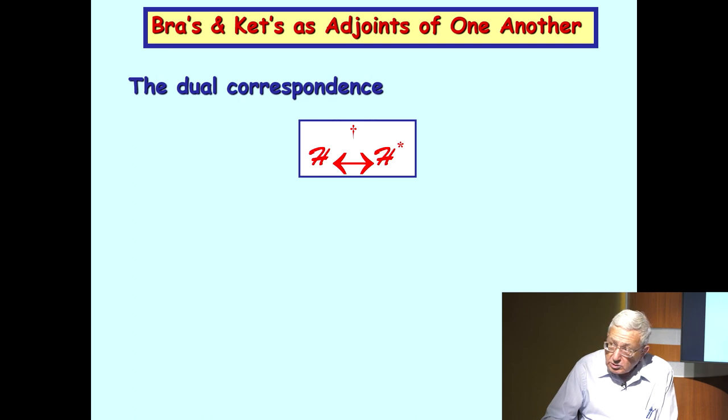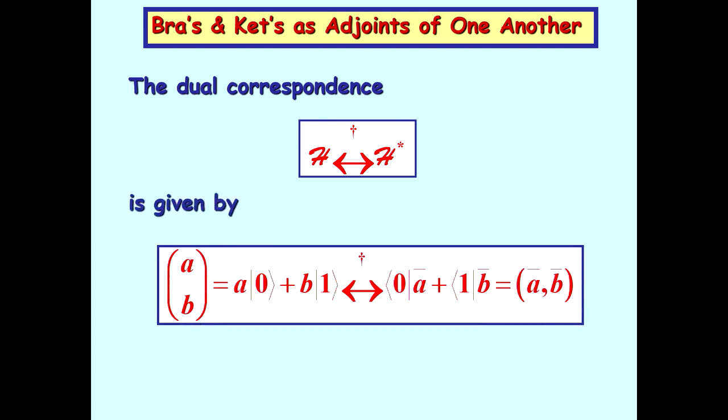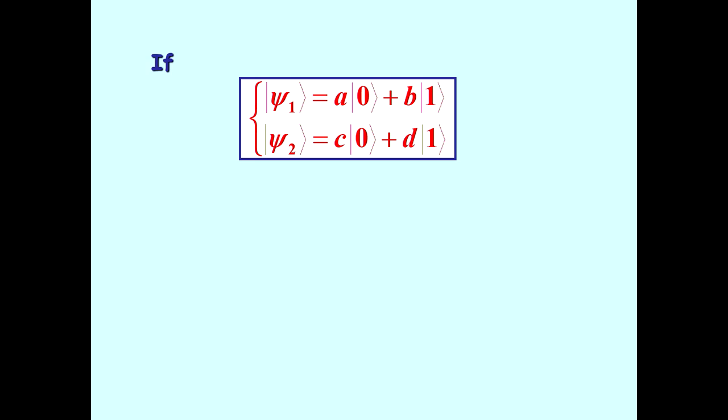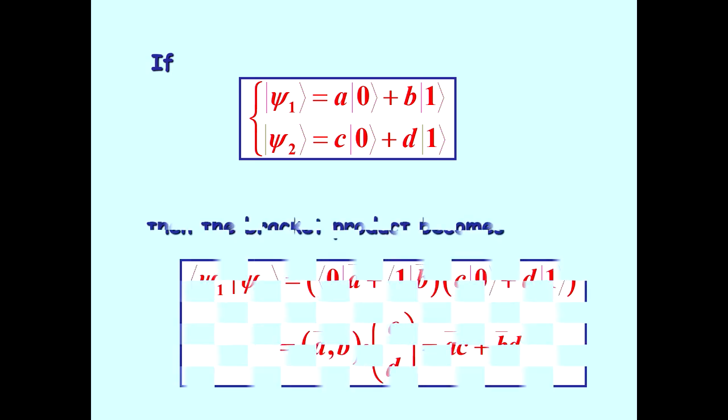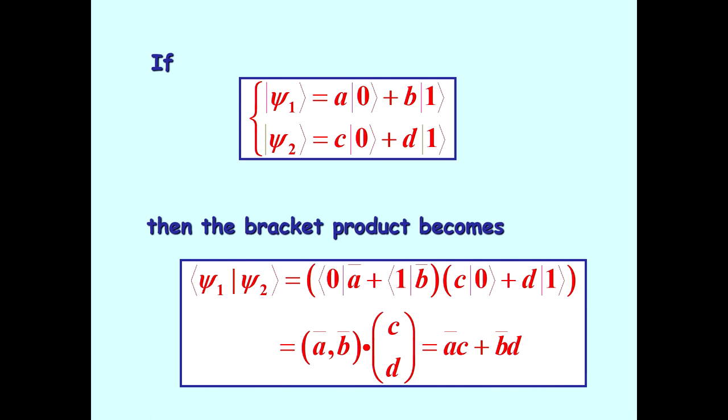Bras and kets are adjoints to one another. There's an adjoint operator, which is the conjugate transformation operator, which transforms kets, which are column vectors, into row vectors, which are bras. And it simply transposes and conjugates. That's it. There's a combination. So, let's look at our two kets. In forming the bra, we actually perform the transpose and complex conjugate, and perform the resulting matrix multiplication to produce the bracket product.